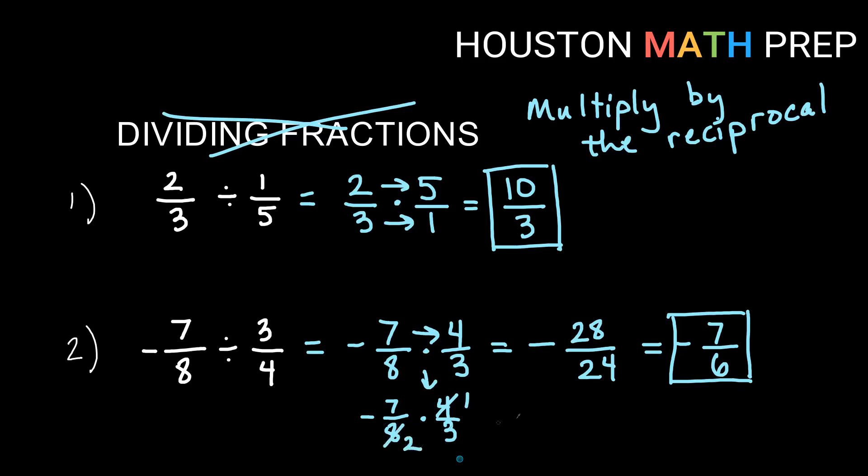And then again, negative times a positive will give me negative. Seven times one on the top is now smaller, seven, and two times three on the bottom is also smaller, six, and it arrives already reduced for us.